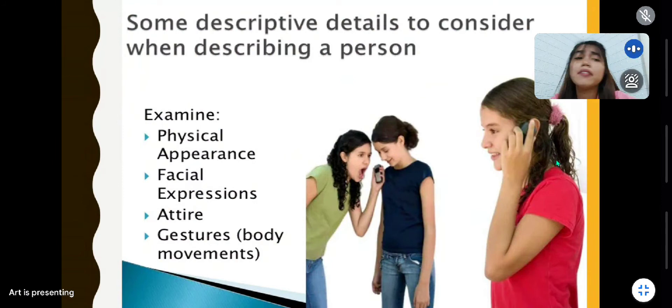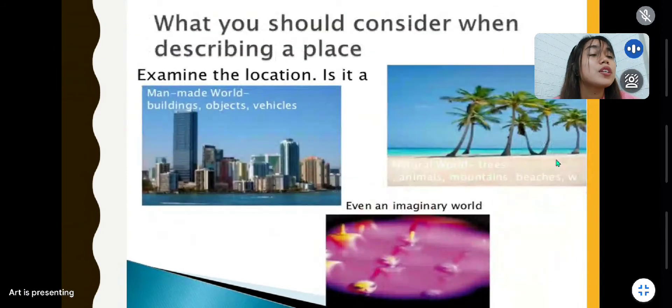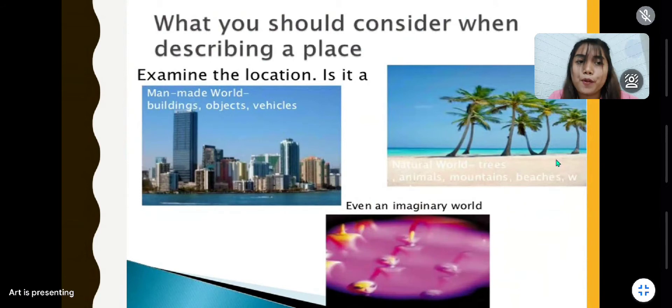Now in describing a place, what you should consider is that you need to examine the location. Is it a man-made world—buildings, objects, vehicles—or it's just a natural world that includes trees, animals, mountains, beaches? And also you can describe even an imaginary world, a place that doesn't exist, even if it's just an imaginary world.